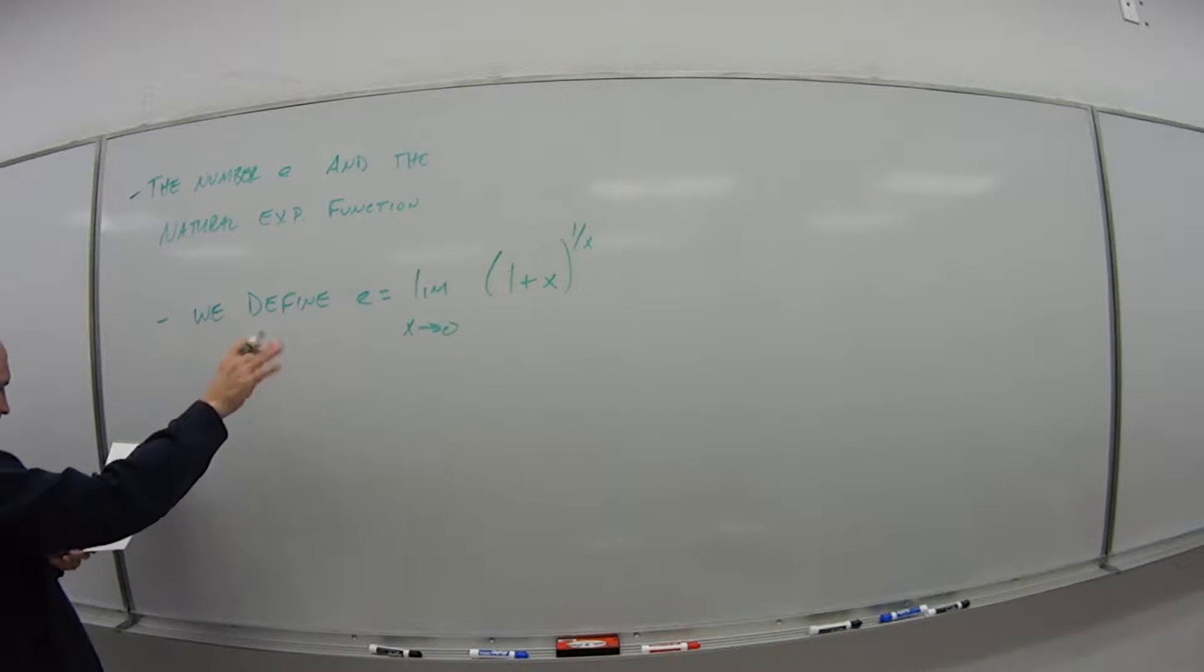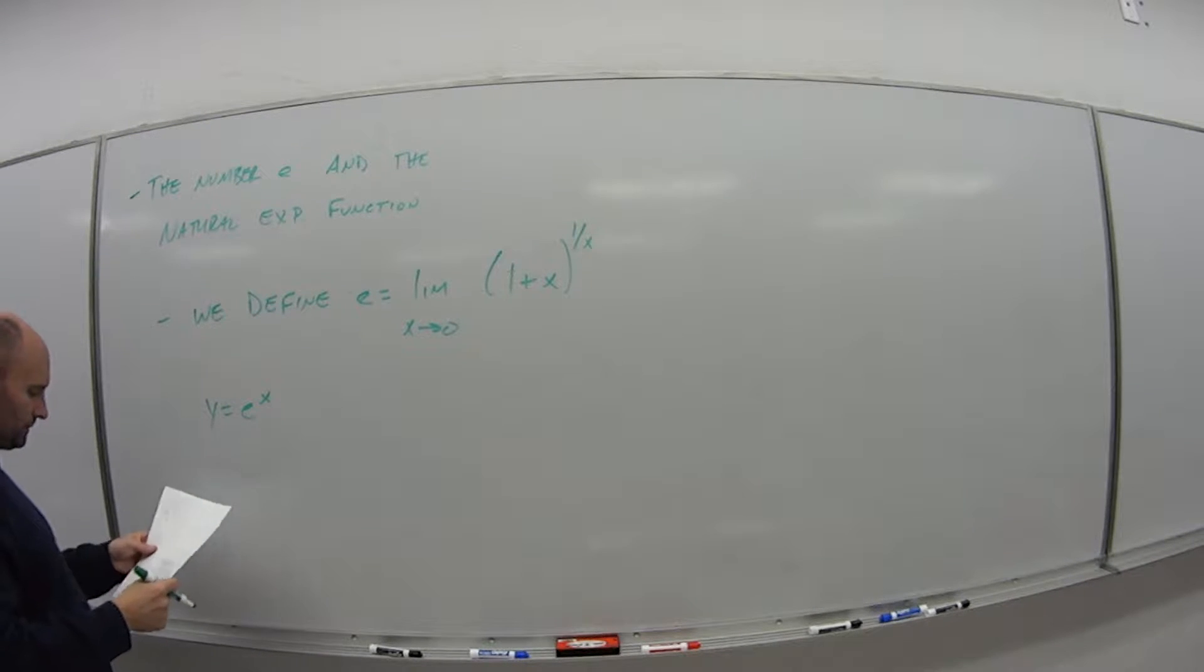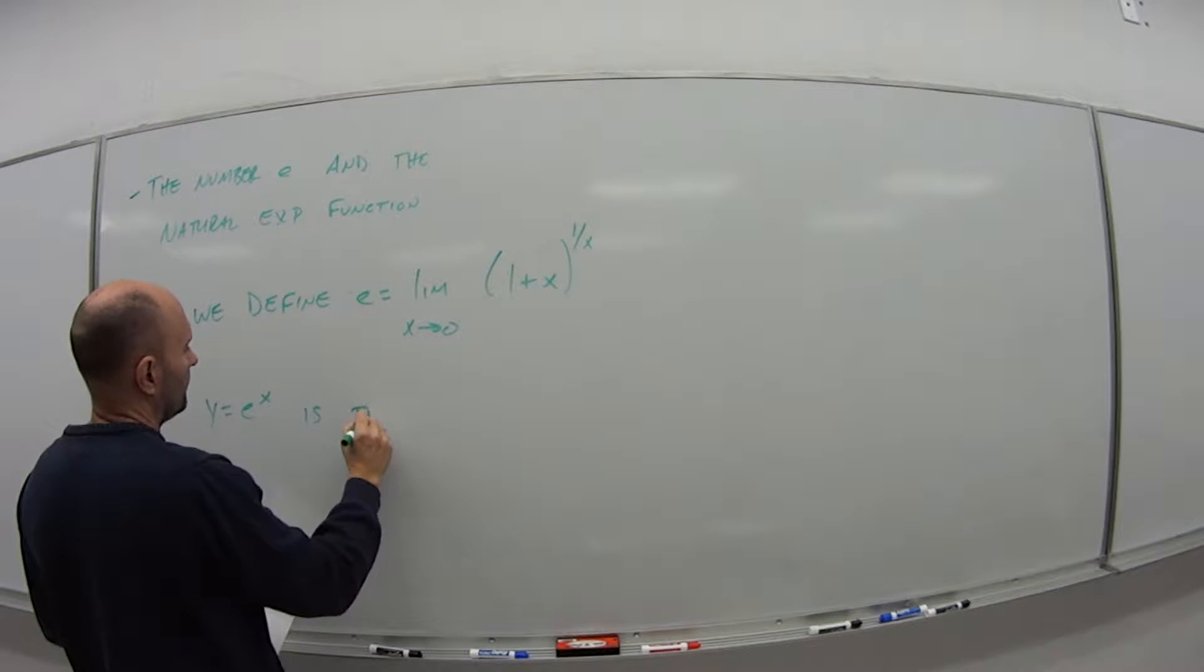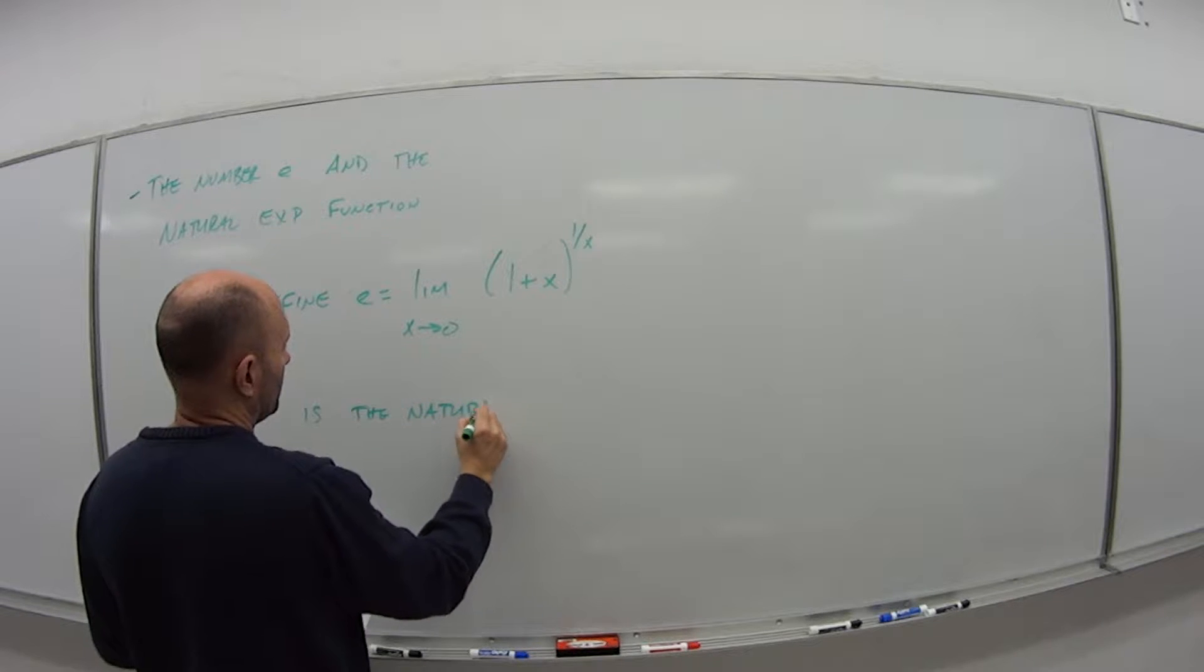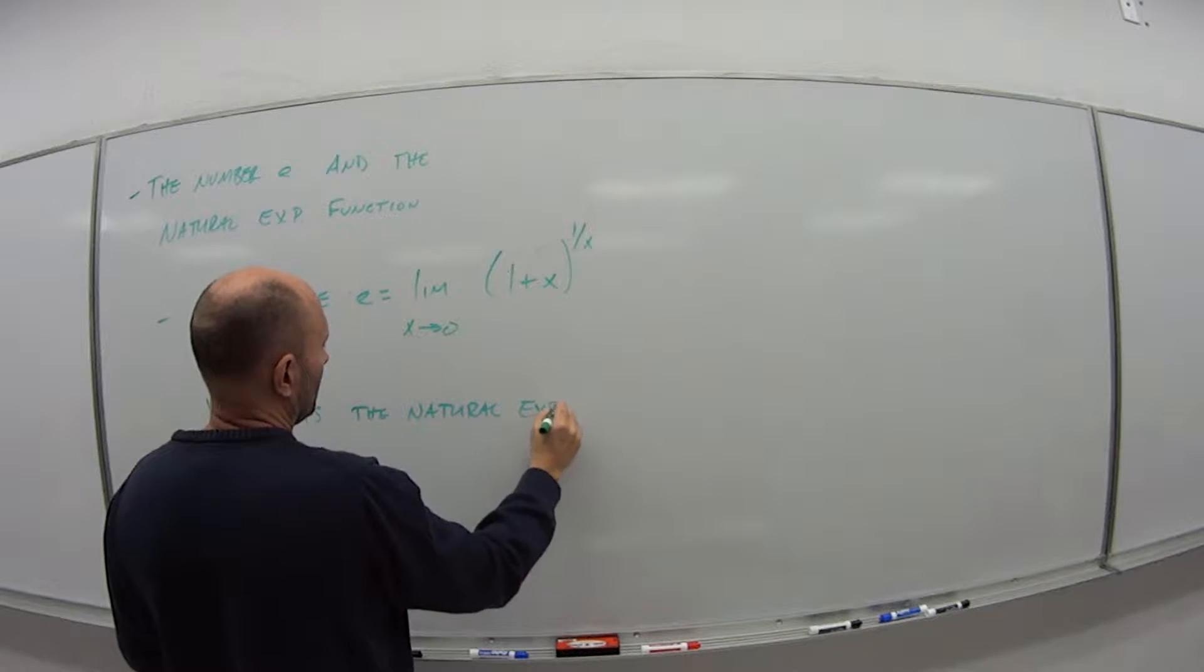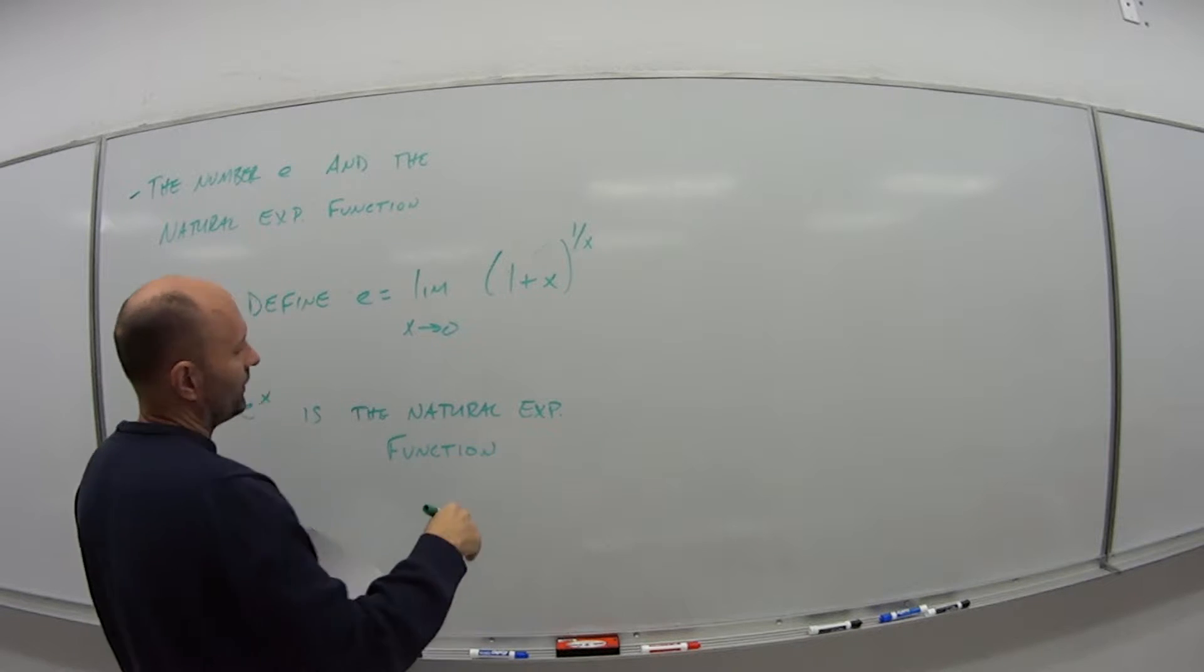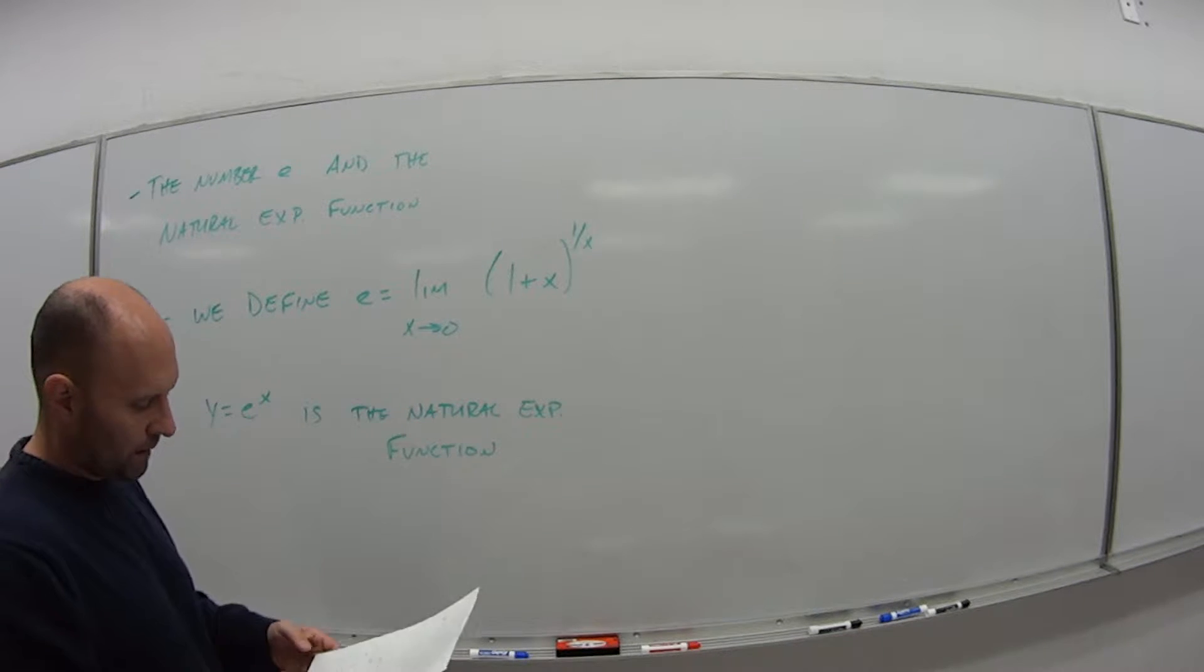We define e as that and then we say that y equals e to the x power is what's known as the natural exponential function. So if someone says I have the natural exponential function, it's e to the x power, that's what they're talking about.